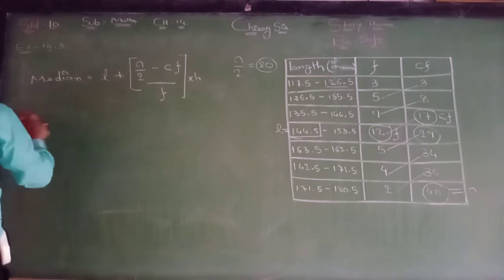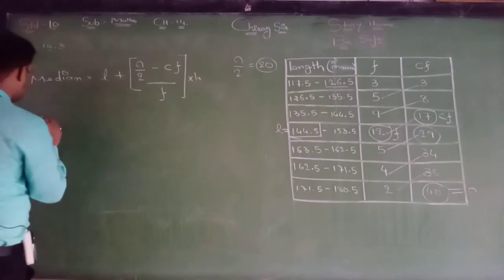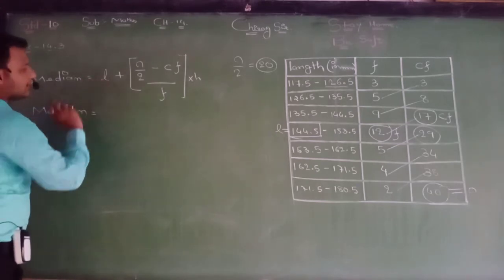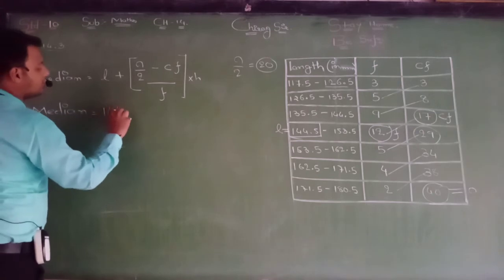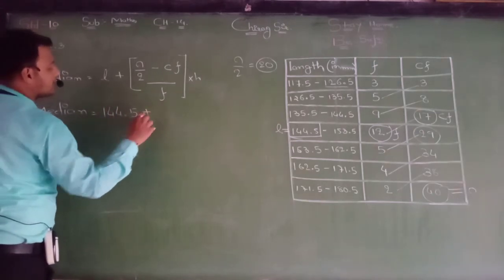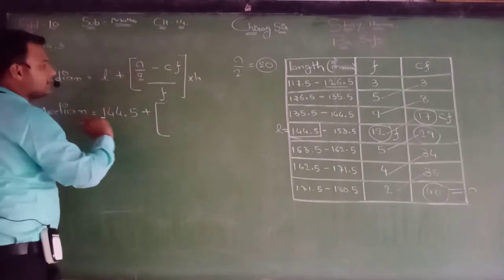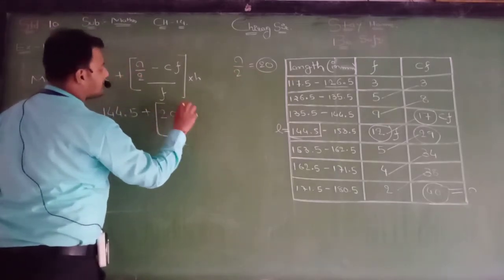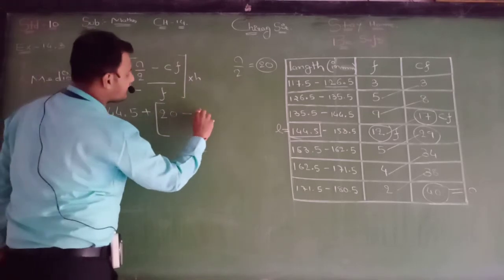We are having each and everything. Let us substitute the value. Median equals L, 144.5 plus N by 2, that is 20, minus CF, CF is 17.